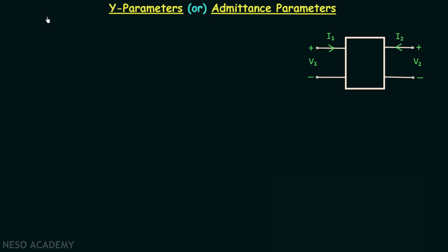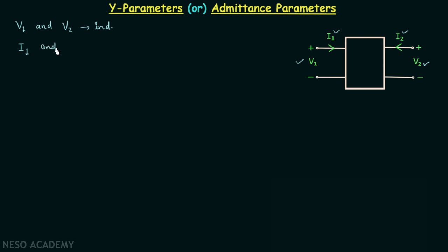We have completed Z parameters or impedance parameters and now we are going to discuss Y parameters or admittance parameters. In the case of Z parameters, current I1 and I2 were the independent variables and voltages V1 and V2 were the dependent variables. In the case of Y parameters, V1 and V2 are the independent variables and I1 and I2 are the dependent variables.